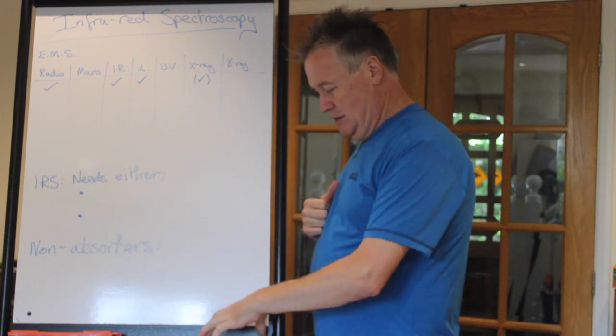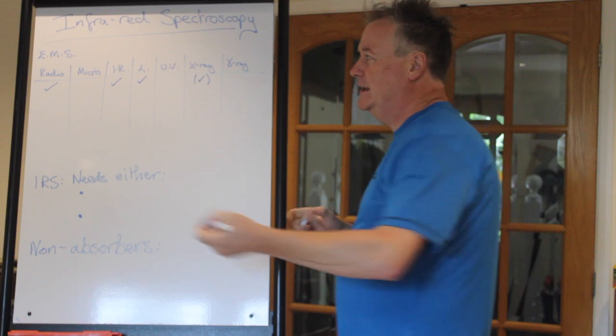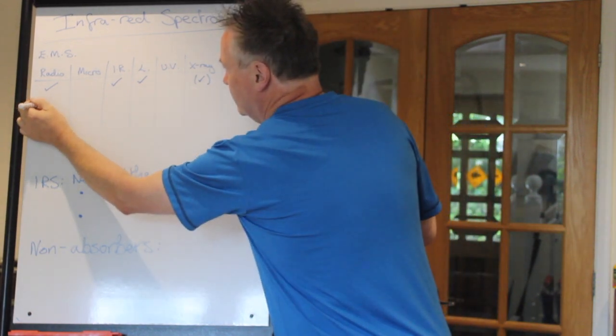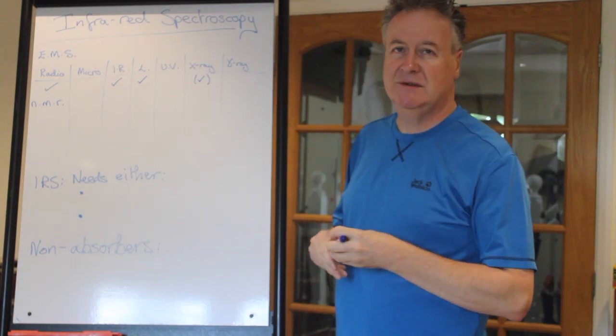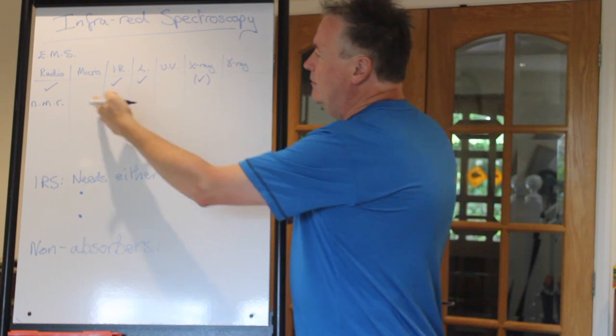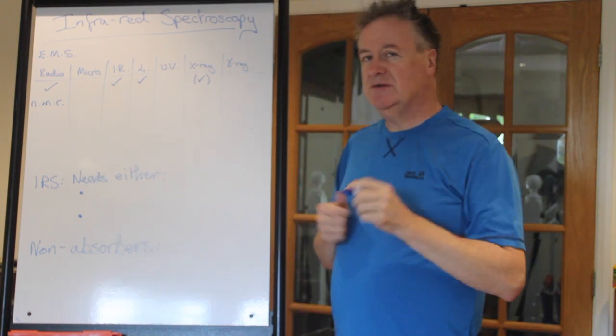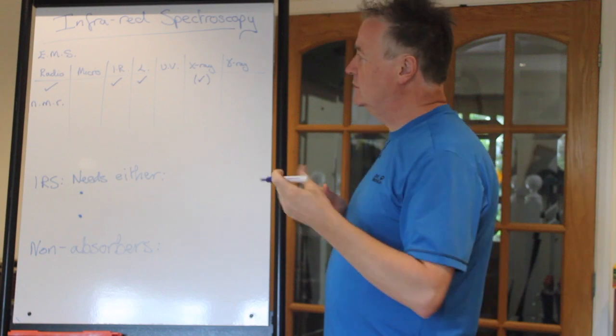Radio waves affect matter in a very subtle way, and it is termed nuclear magnetic resonance. It's also the basis of MRI scanners. Microwaves do a type of spectroscopy that's not at A-level. It rotates molecules, rotational spectroscopy.